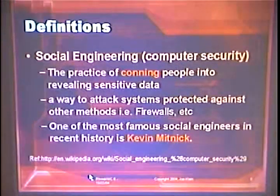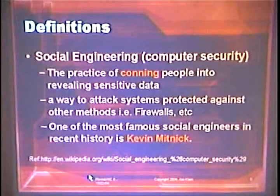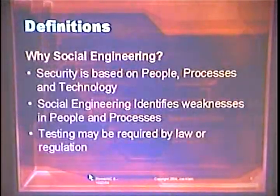One of the most famous social engineers is Kevin Mitnick — well, he got caught. Why social engineering? Security is based on three things: people, process, and technology. At security conferences we talk a lot about technology — the bits moving through the wires. Unfortunately, it doesn't typically deal with the processes an organization goes through that might have vulnerabilities, and it doesn't deal with the people issues. Social engineering identifies people and process problems, and there are a lot of them.